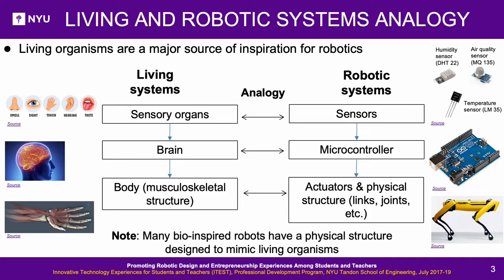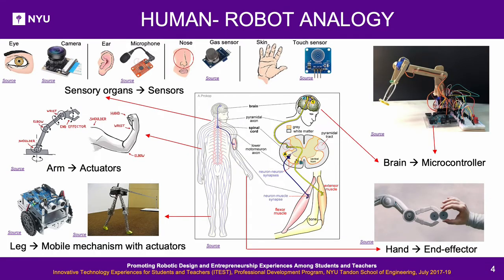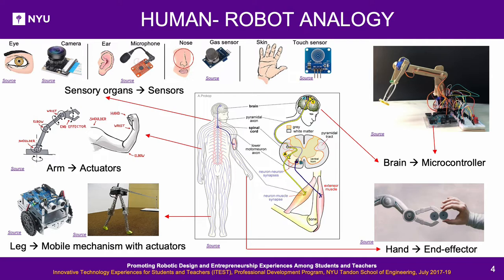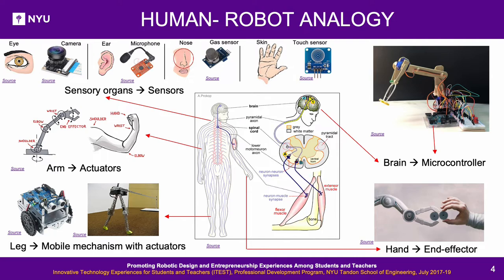For example, an automatic blinds roller could detect that it is morning using a light sensor, and roll up the blinds using a motor. Many bio-inspired robots have a physical structure designed to mimic living systems. In the human-robot analogy, sensory organs — eyes, nose, ear, skin — are analogous to robot sensors such as camera, microphone, gas sensor, and touch or force sensors. The human arm is analogous to a robotic arm with actuators having the same degrees of freedom. Lower limb mobility is analogous to a robot's wheeled base or biped structure. The brain sends signals to the musculoskeletal system based on sensory information; analogously, a microcontroller uses sensor information to control a robot's actuators based on its program.